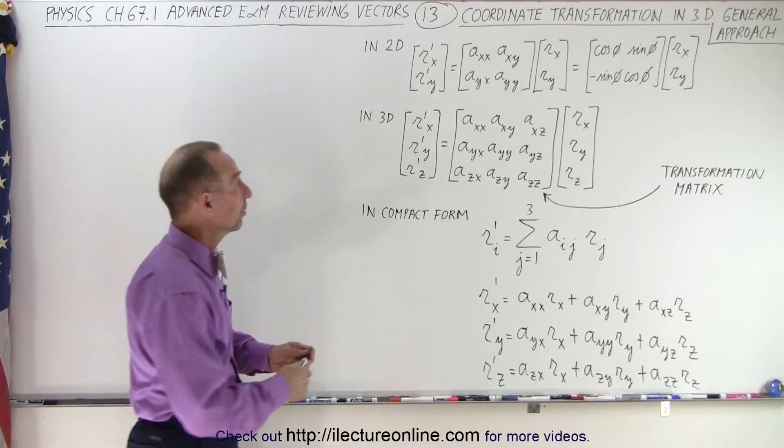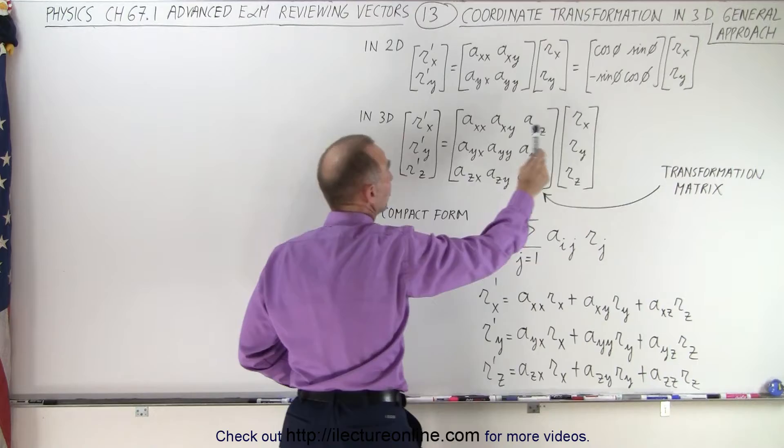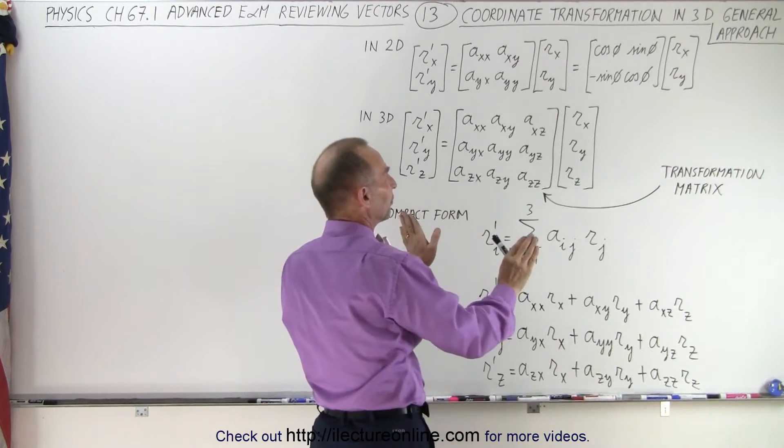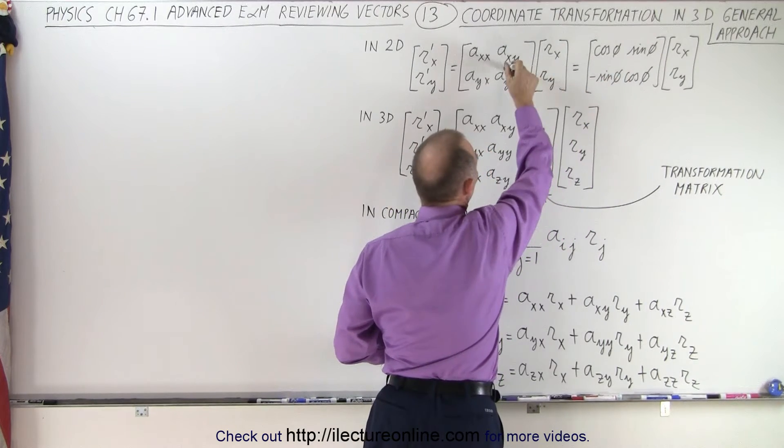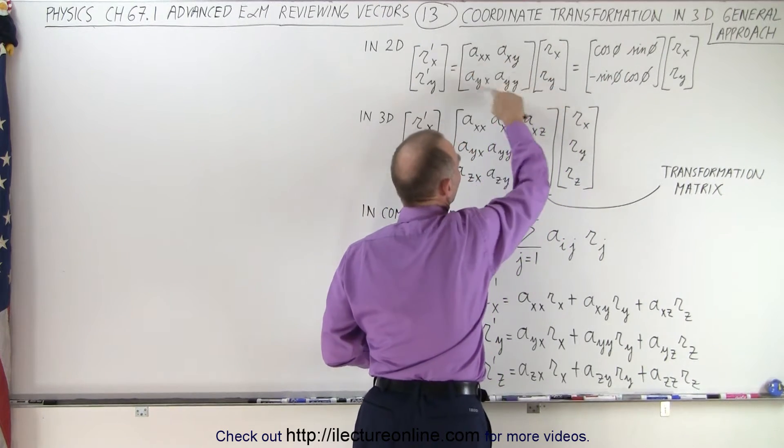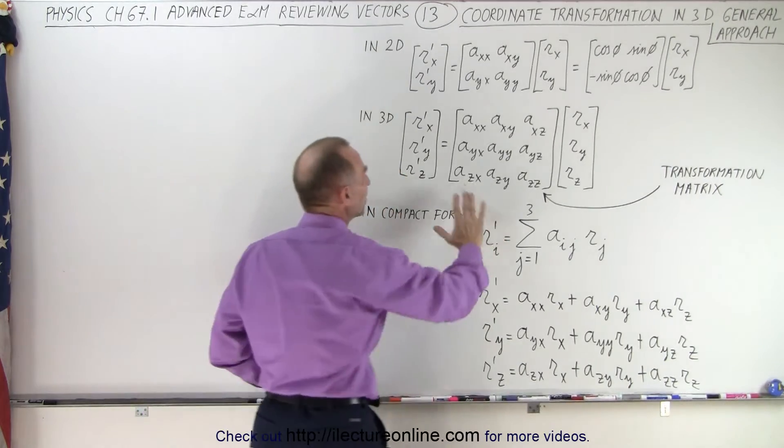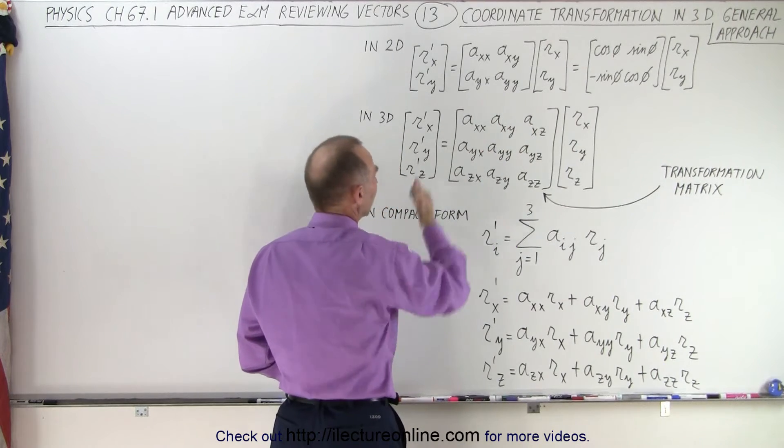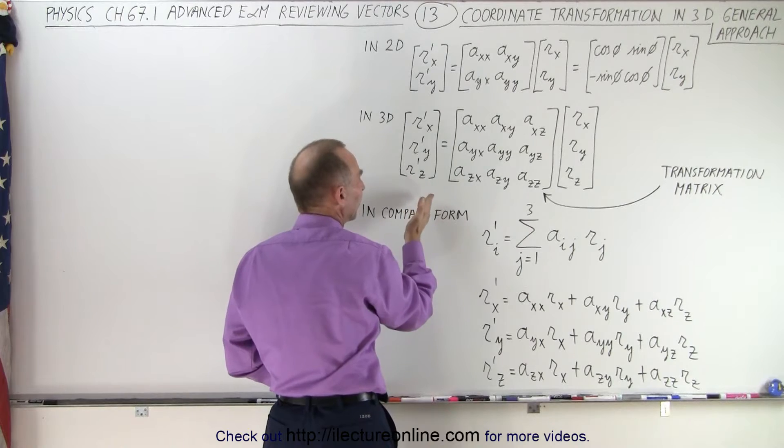To reference it, this is what we saw in the previous videos where we had the two-dimensional transformation matrix when we rotated the xy-axis to an angle of phi. That would then be the transformation matrix which is the replacement of this general format of the matrix. And so in the same way, we can come up with a three-dimensional transformation matrix that has nine elements. And here we have the xyz components of the vector in the new coordinate system, the rotated coordinate system.